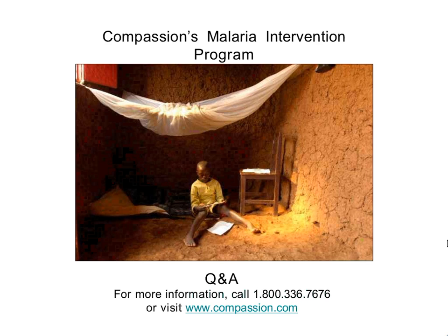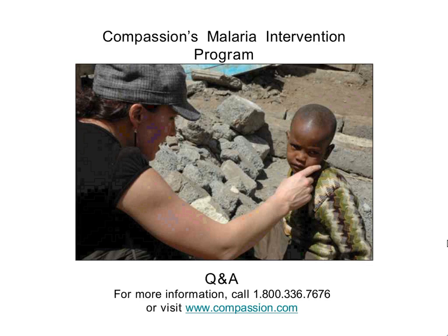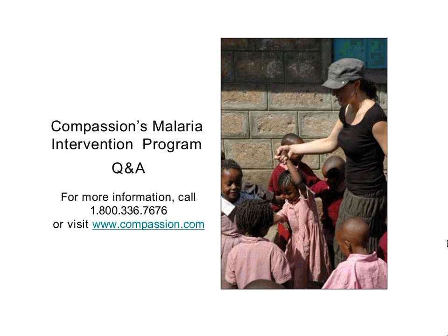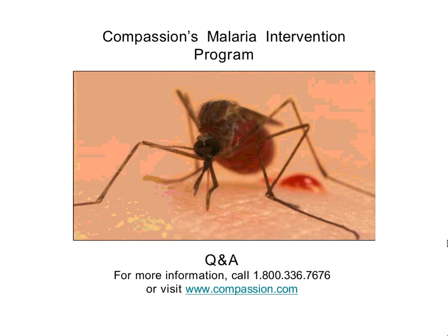How long are the nets good for? How long are they effective? In the past, nets have needed to be treated periodically. We've been moving now toward what are called long-lasting insecticide-treated nets. These are manufactured with the insecticide embedded in the fabric in such a way that it will last for three years in the field. Some companies are planning for five years. And part of the education that happens at the church is in maintaining the net — making sure it's used properly, doesn't get tears in it, and that it's tucked in well.